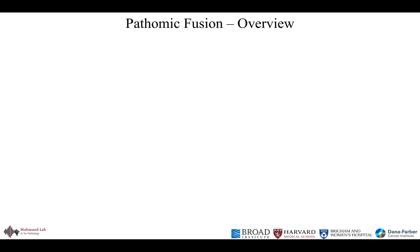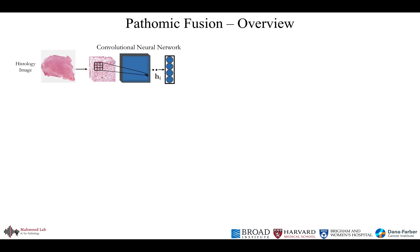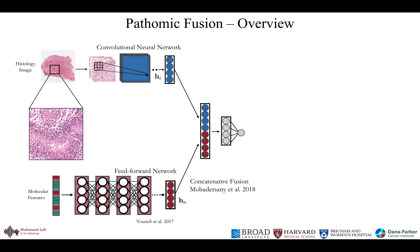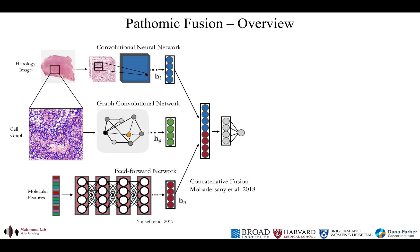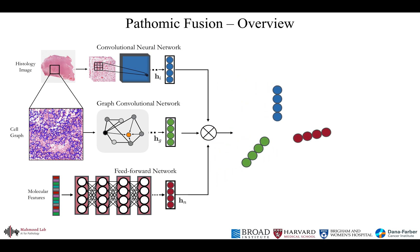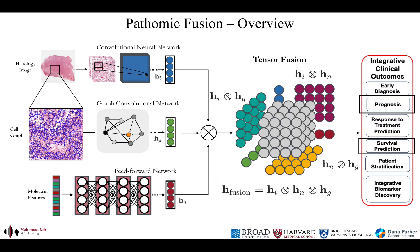To solve this issue, we present a method called Pathomic Fusion. After extracting morphological features via CNNs and genomic features via multilayer perceptrons, we propose to represent cells in histology tissue as nodes in a graph, and then a network called graph convolutional networks is used to model cell-to-cell interactions and tumor community structure. Our work is the first to use GCNs for survival. Instead of concatenating these unimodal feature representations, we propose to model the feature interactions across all modalities using a fusion strategy called tensor fusion. Our method is agnostic to different types and combinations of modalities and can be used for any learning task, demonstrated here for survival prediction.